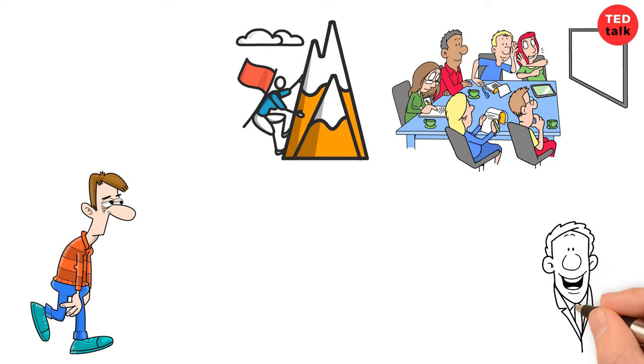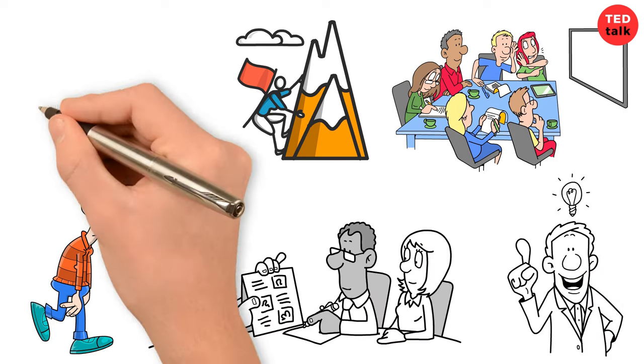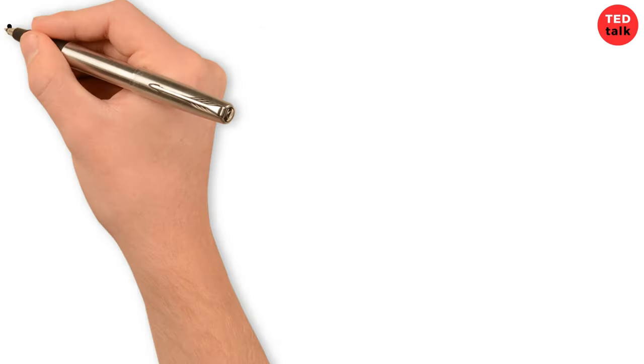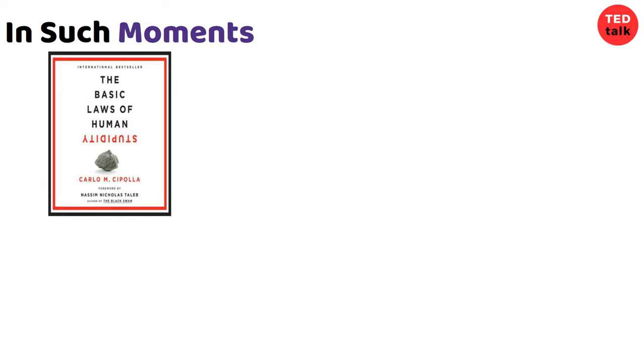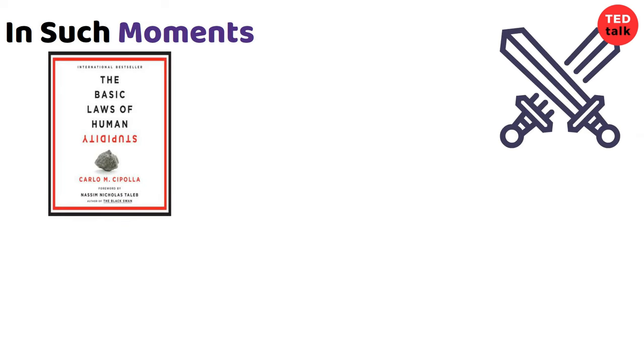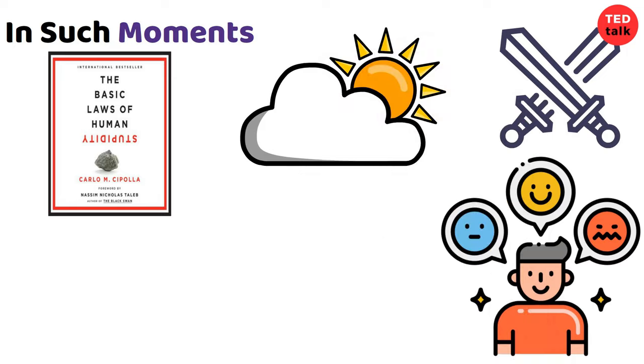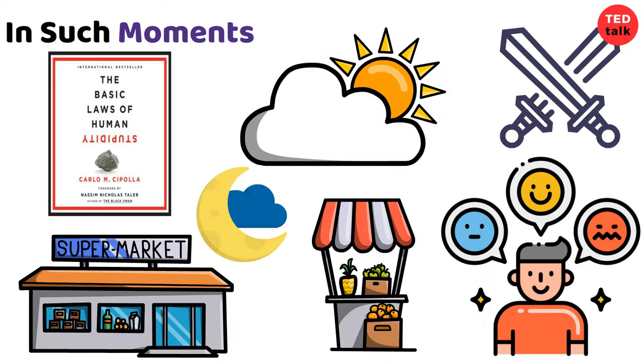While some may excel with their innovative ideas and strategic thinking, others may falter with their short-sightedness or lack of foresight. In such moments, Cipolla's law of underestimation comes into play, challenging us to look beyond outward appearances and recognize the inherent variability of human behavior. As the sun sets on another day and the bustle of the marketplace gives way to the quiet of the night,